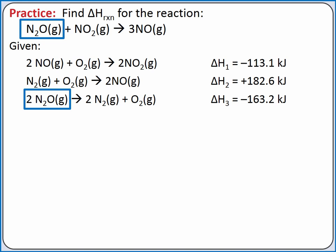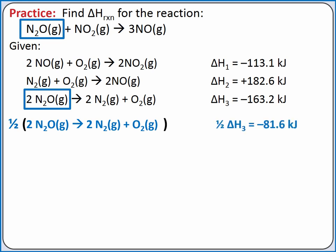We want one mole of dinitrogen monoxide gas as a reactant, but in the third equation we have two moles of dinitrogen monoxide gas as a reactant. So we'll need one half of the third equation. Since we multiply our reaction by one half, we also need to multiply our change in enthalpy by one half.